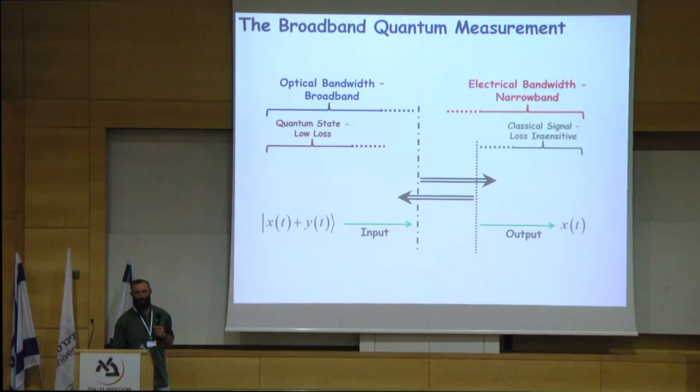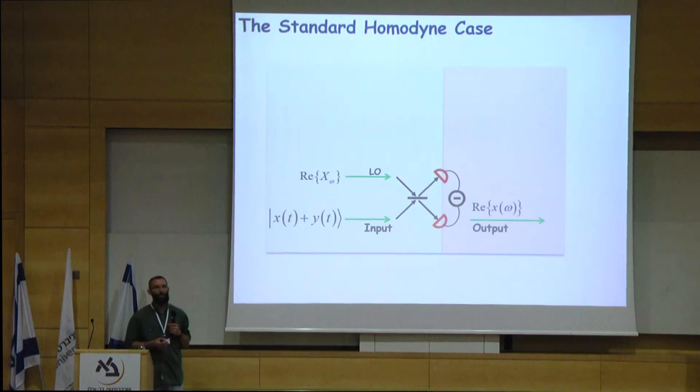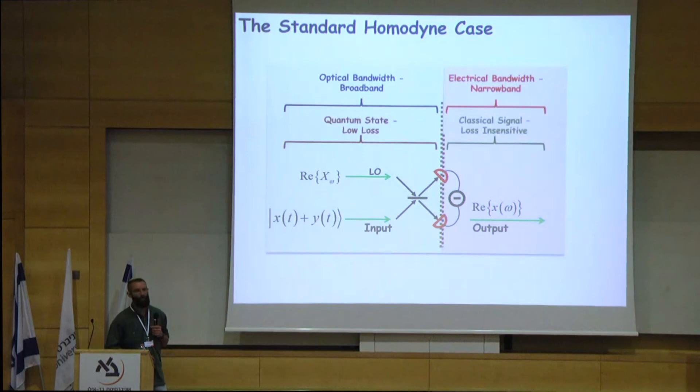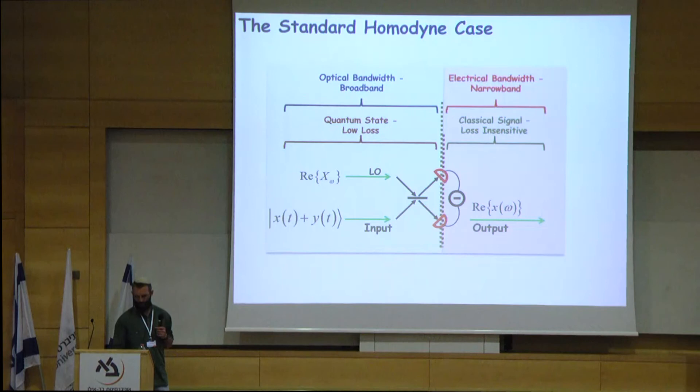Let's take a look at the homodyne measurement. In the standard homodyne detection, we use the photodetectors in order to amplify the information from the quantum region to the classical region. But it is the same photodetectors that also reduce our bandwidth from the optical input signal to the electrical output. So the two transitions occur inside the photodetectors. In parametric homodyne, we find that we open a window — a gap between these two transitions.